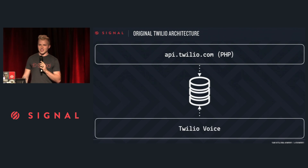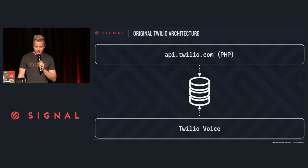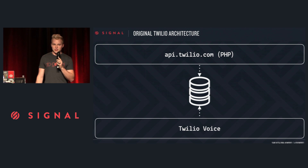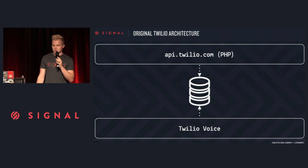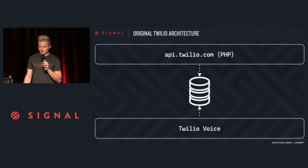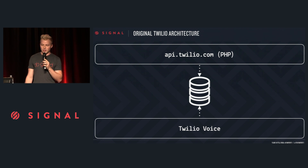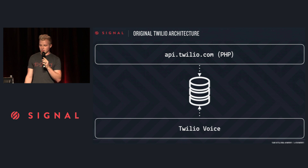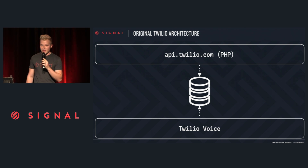Seven years ago, this is basically what Twilio looked like. It was voice only — SMS wasn't in the picture yet. On one side of the world we had Twilio Voice, a Java service that implemented TwiML and our connections to the carriers — everything you know and love today as the Twilio voice product. On the other side of the system, we had PHP. PHP powered the API, the website, our billing systems, and pretty much everything else. They communicated by means of a shared database. You would make a POST request to the calls endpoint, the API would validate and authenticate it, drop a row into the calls table, and then Java would poll for new calls, pick them up, make phone calls, write status updates back to the database, and you'd get your results back.